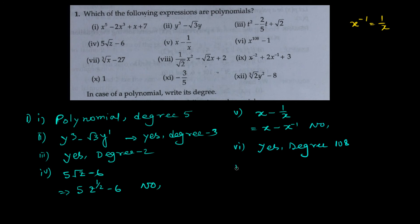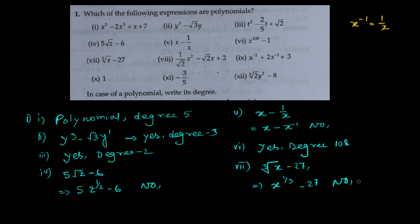The seventh one is the cube root of x minus 27. If I simplify it, it will be x to the power 1 by 3 minus 27. The variable again has a fractional power, so it's not a polynomial — and therefore no degree.